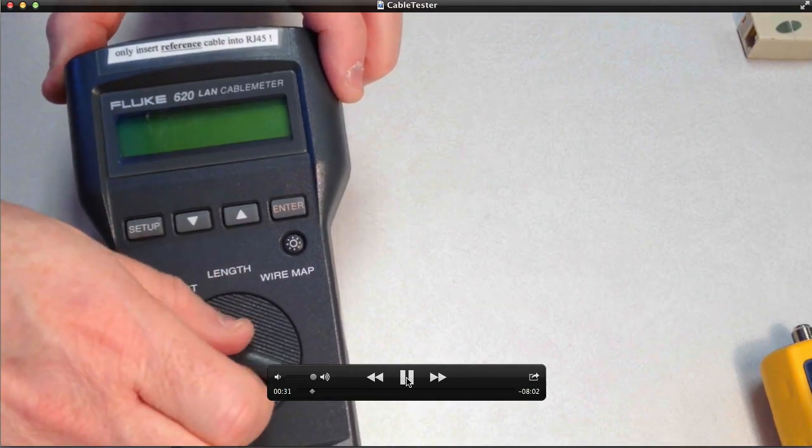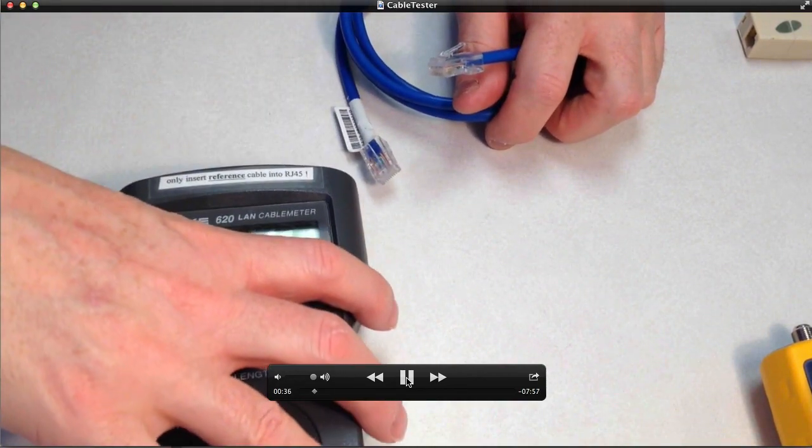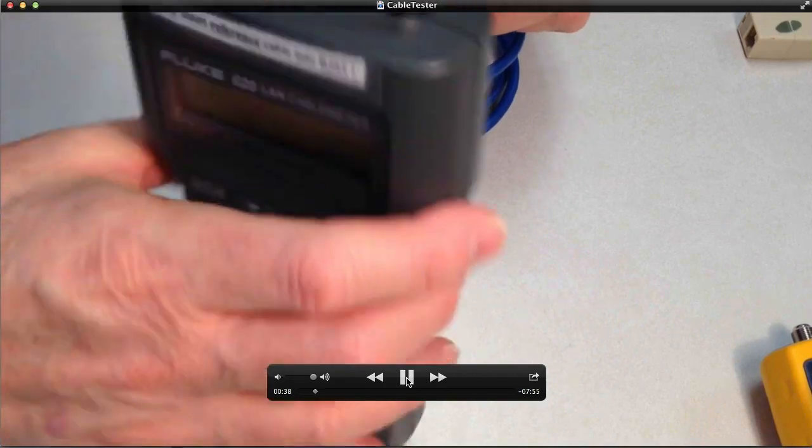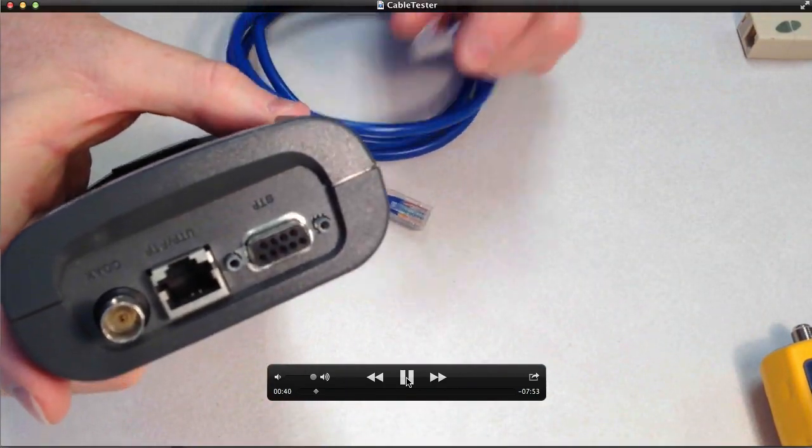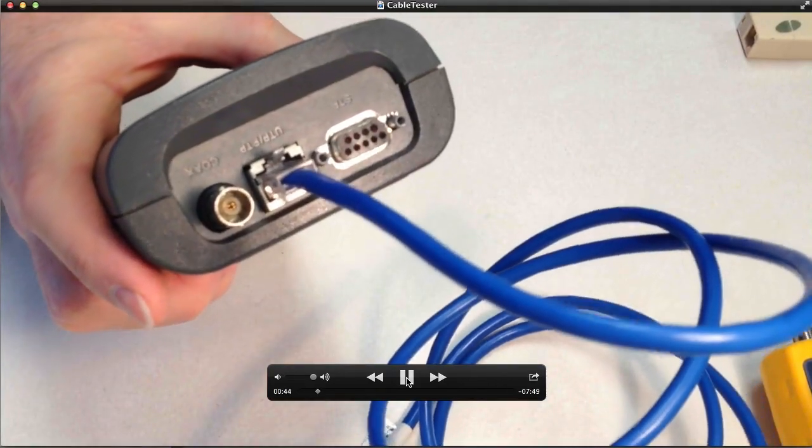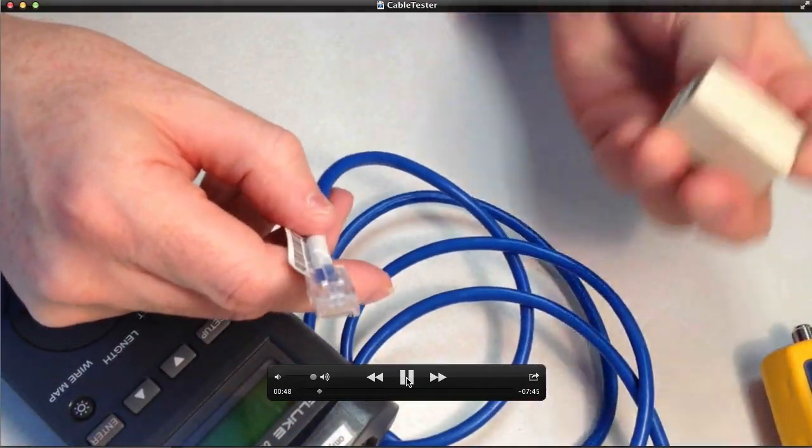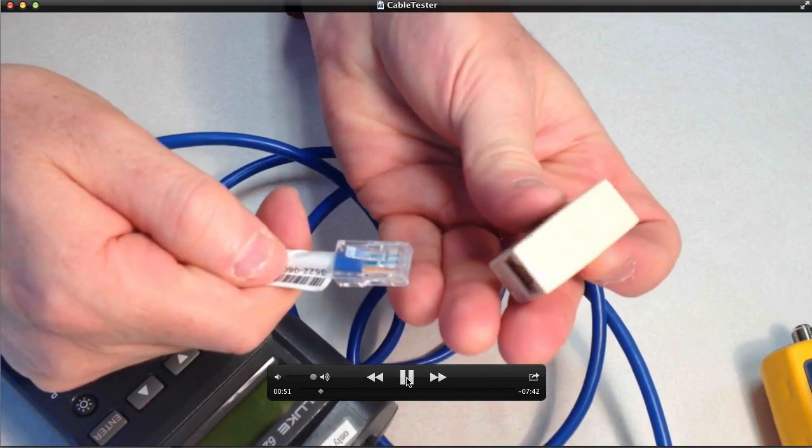We don't have a cable, so certainly we'll identify that very quickly. One thing that's very important is you want to make sure that the cables that you're inserting into the end of it are properly made. If you've made these cables yourself, if there's any flaw in the end, you can damage the end that goes into the cable tester.